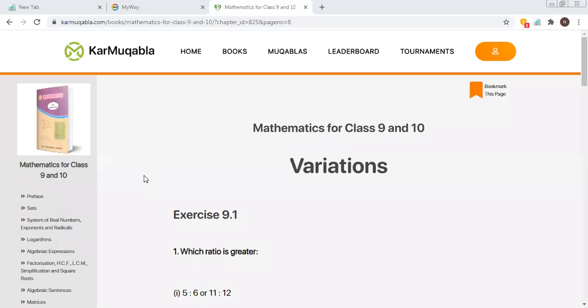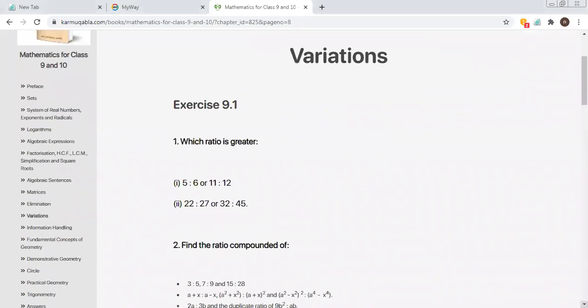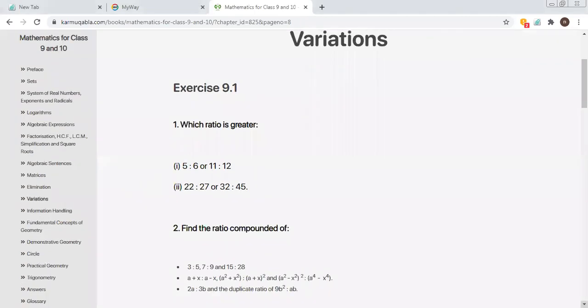Assalamu alaikum students. Today we will start to solve Exercise 9.1 of Chapter Variation. We discussed variation examples in last class. Today we will solve Exercise 9.1 and the first question is which ratio is greater.